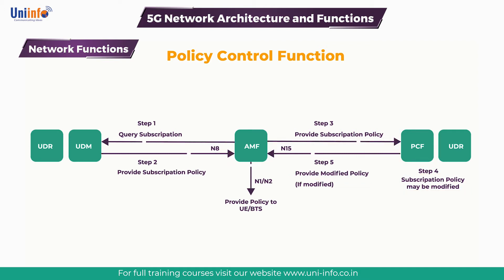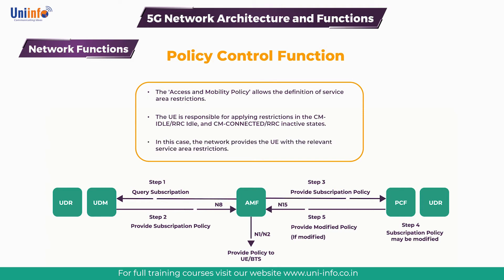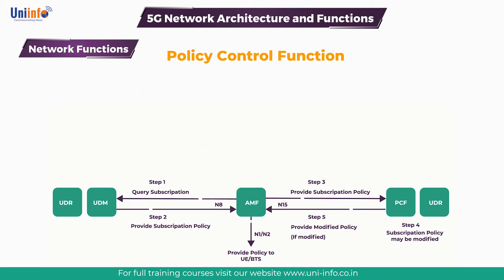The general pattern illustrated in the figure is applicable to the access and mobility policy, which the AMF retrieves from the UDM during the UE registration procedure. The access and mobility policy allows a definition of service area restrictions. The UE is responsible for applying restrictions in the CM idle or RRC idle and CM connected or RRC inactive states. In this case, the network provides the UE with the relevant service area restrictions, for example a list of forbidden tracking areas.